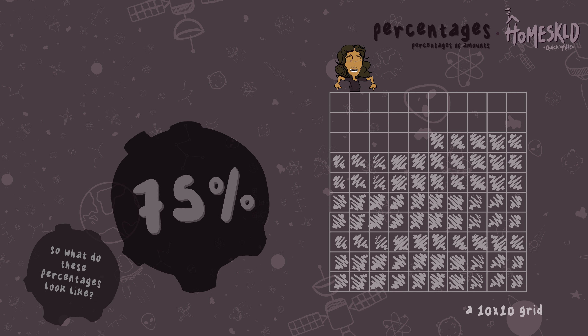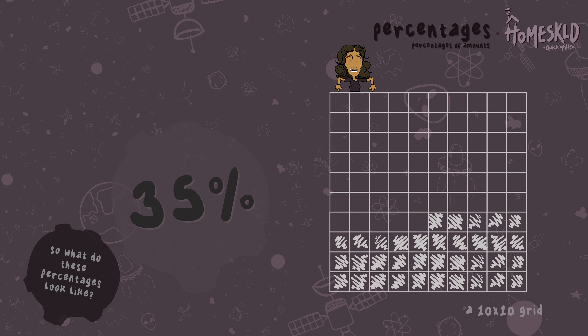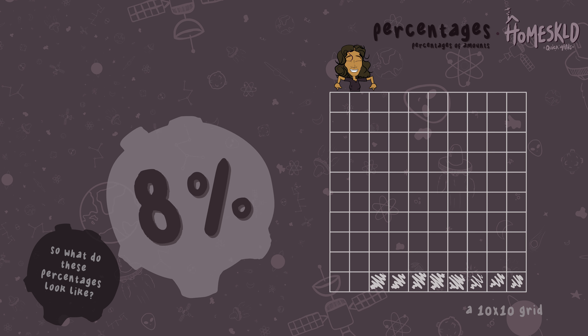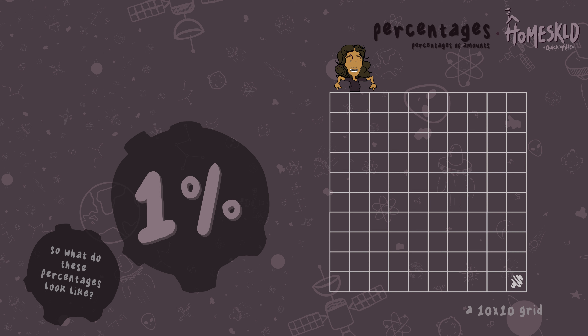75% is 25% less than 100%, so 75 for every 100 squares are shaded in to accurately illustrate this percentage. Now look at 50% — half of the grid — then 35%, now 17%, then 8%, and finally 1%. This is what these percentages look like.